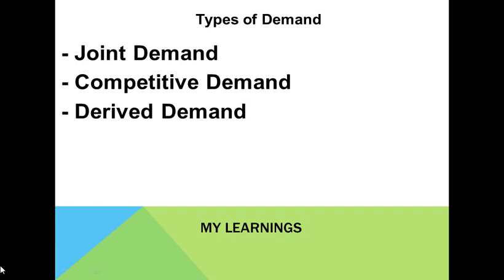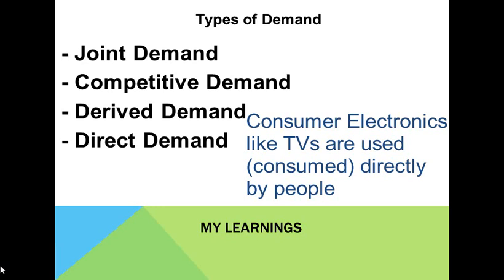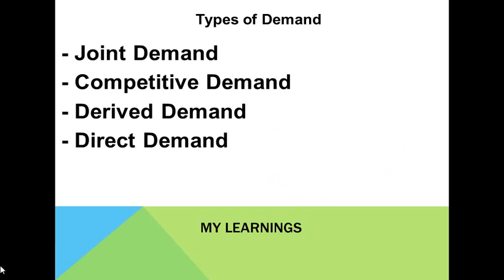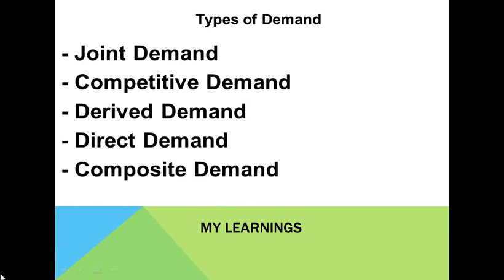Therefore, the demand for cement is a derived demand. Direct demand refers to demand of products which are directly consumed by the people. For example, consumer electronics like TV, washing machine, etc. The demand for these products does not depend on the demand of any other product — they are directly consumed by the people.